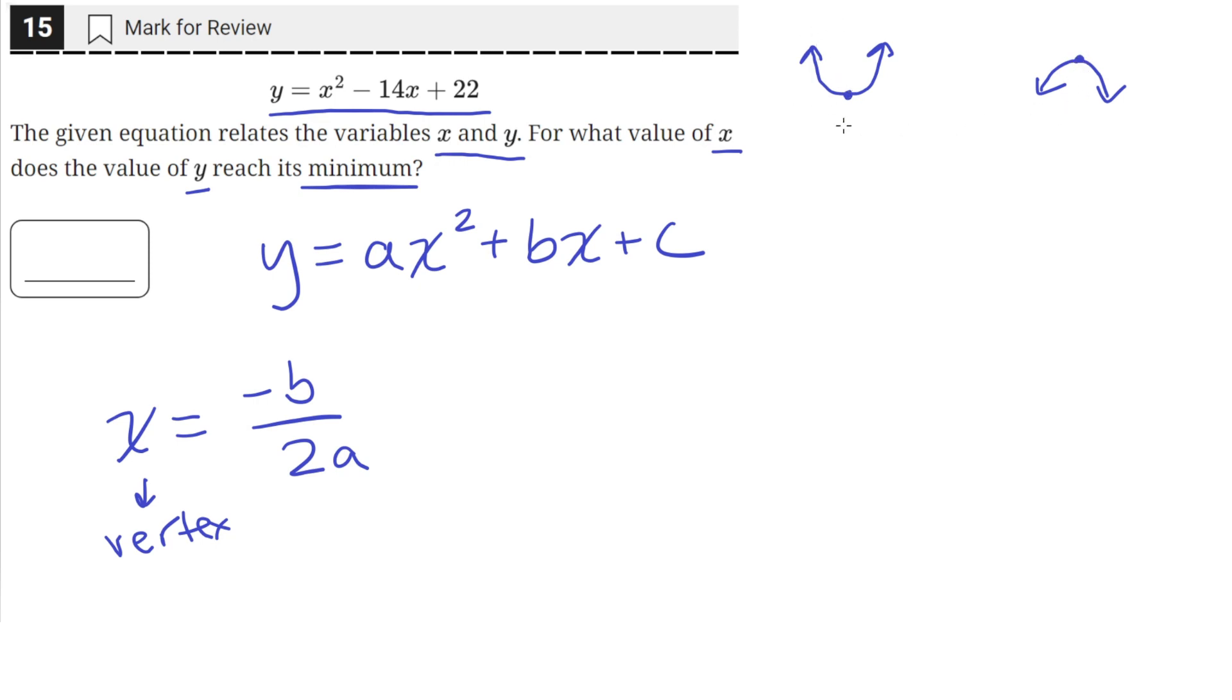So for a concave up, this vertex is the minimum. At the vertex, we would find the smallest value of y over the whole function.